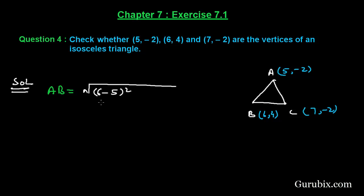So we shall find the square of (6 - 5) plus y₂ is 4, y₁ is -2. If we subtract -2, then it will be plus 2. If we further solve it, this equals 1² + 6². This means square root of 1 + 36. This means square root of 37.